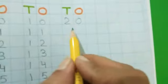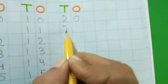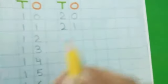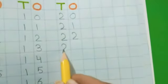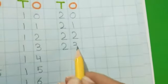So after 20, what will come? 21. Then 22. Then 23. After 23, 24. Very good.